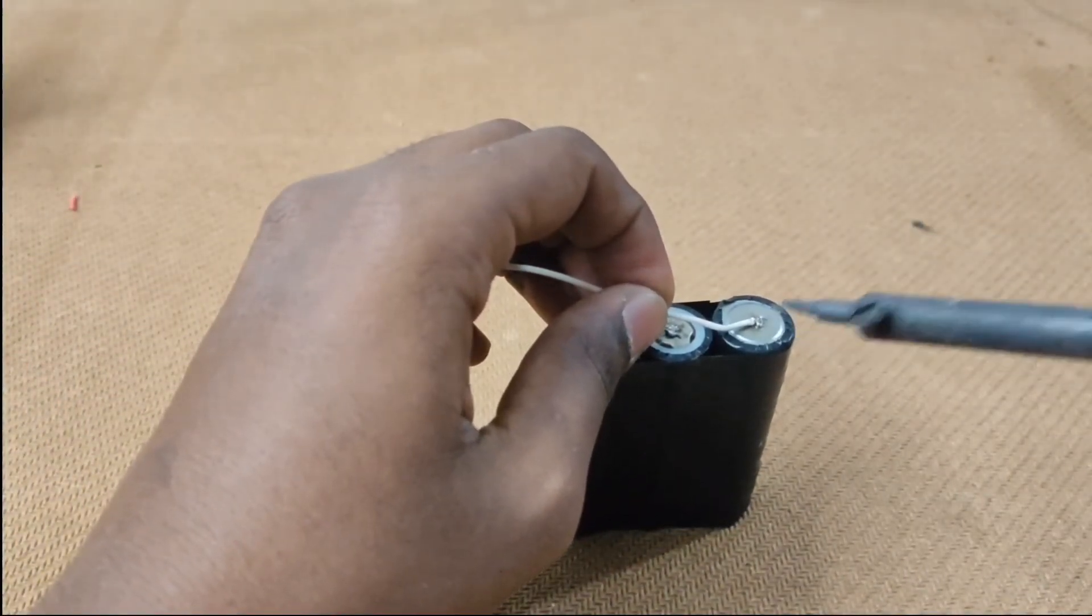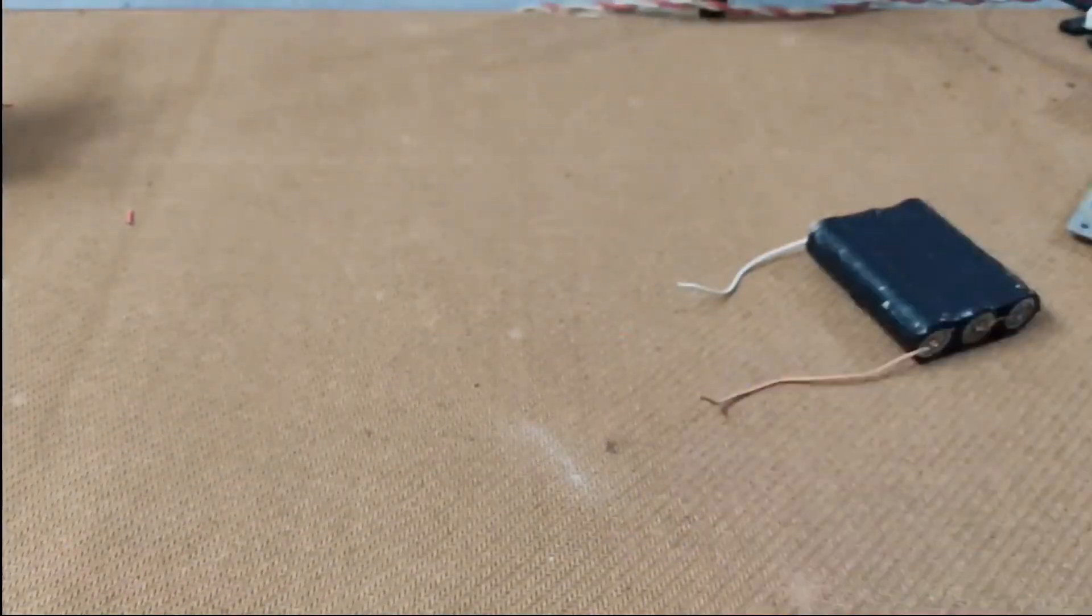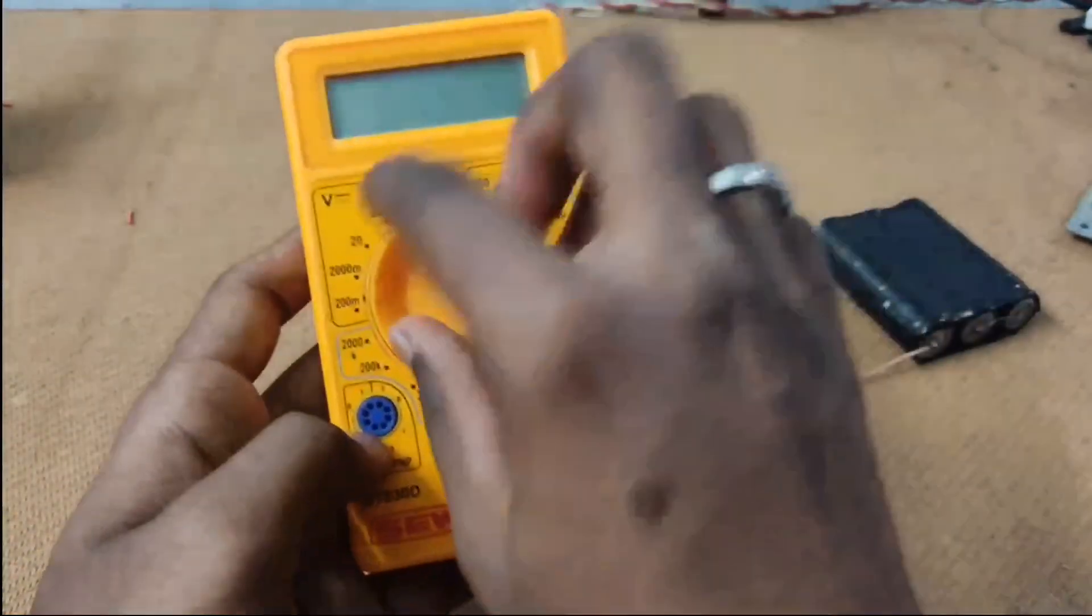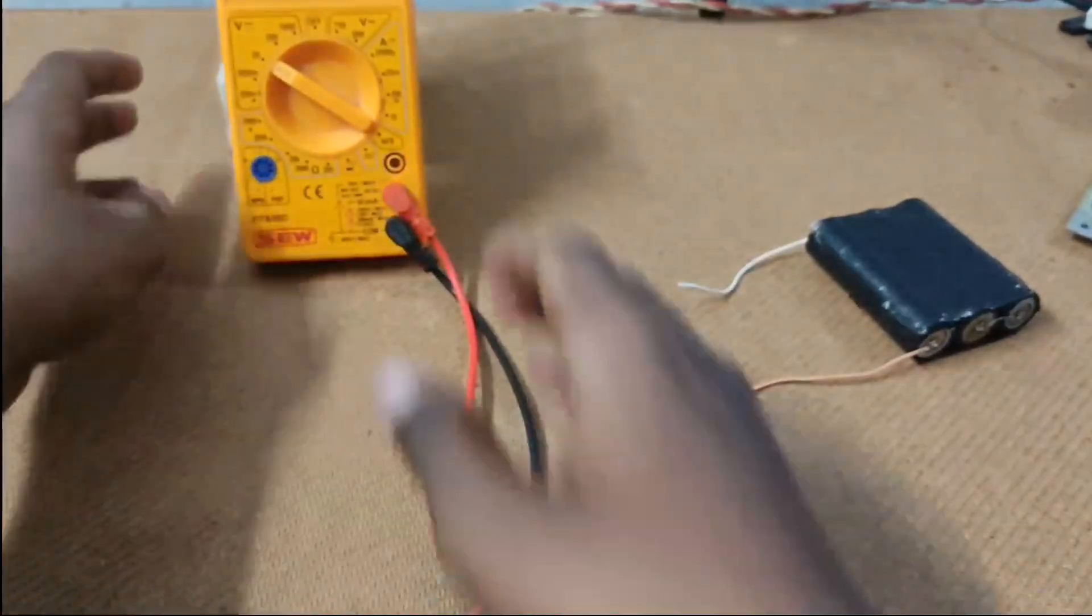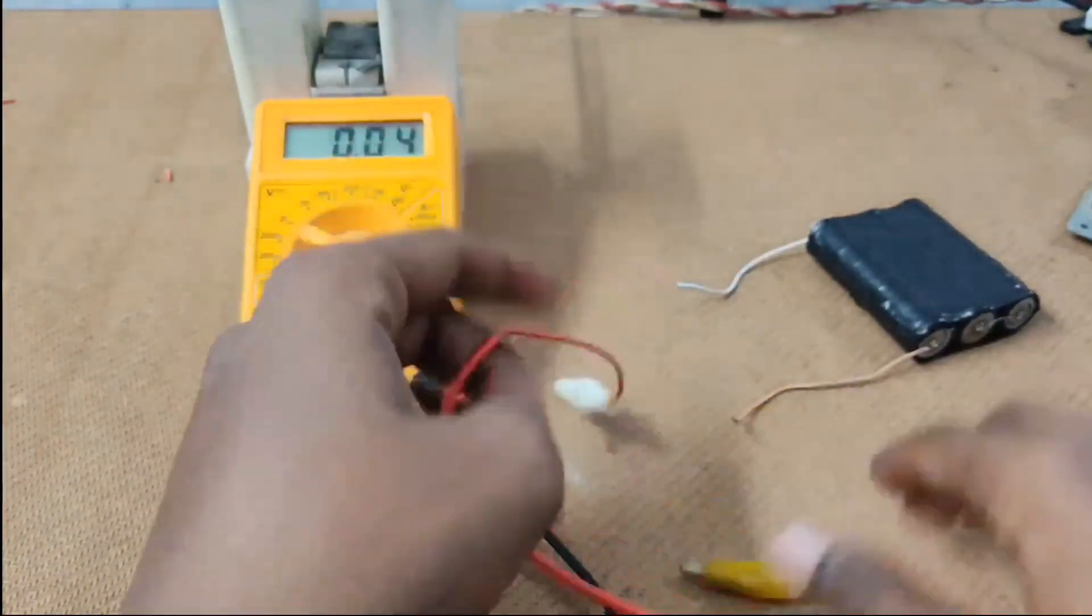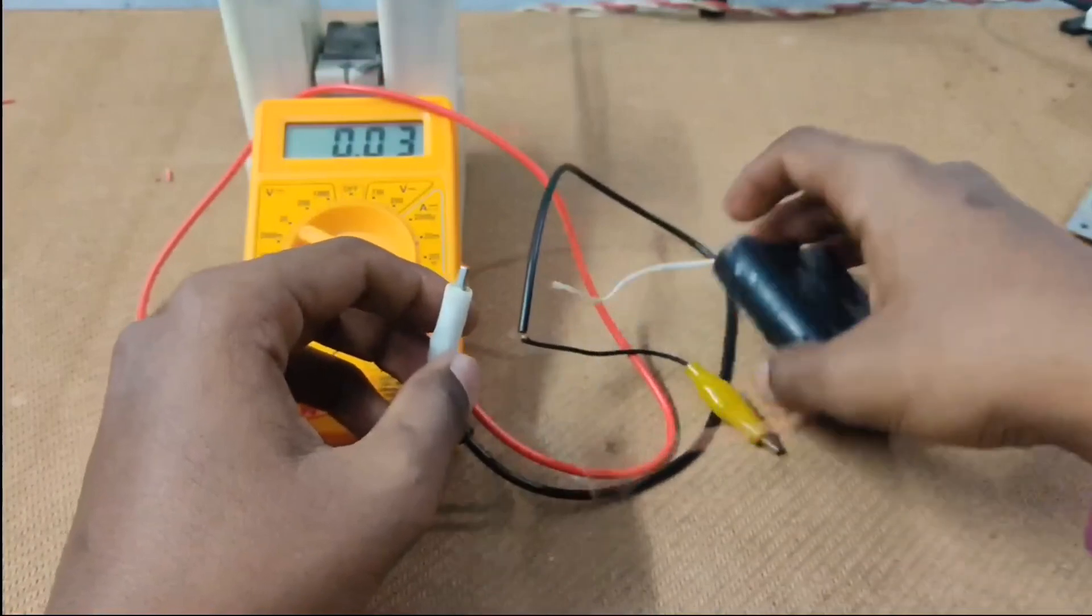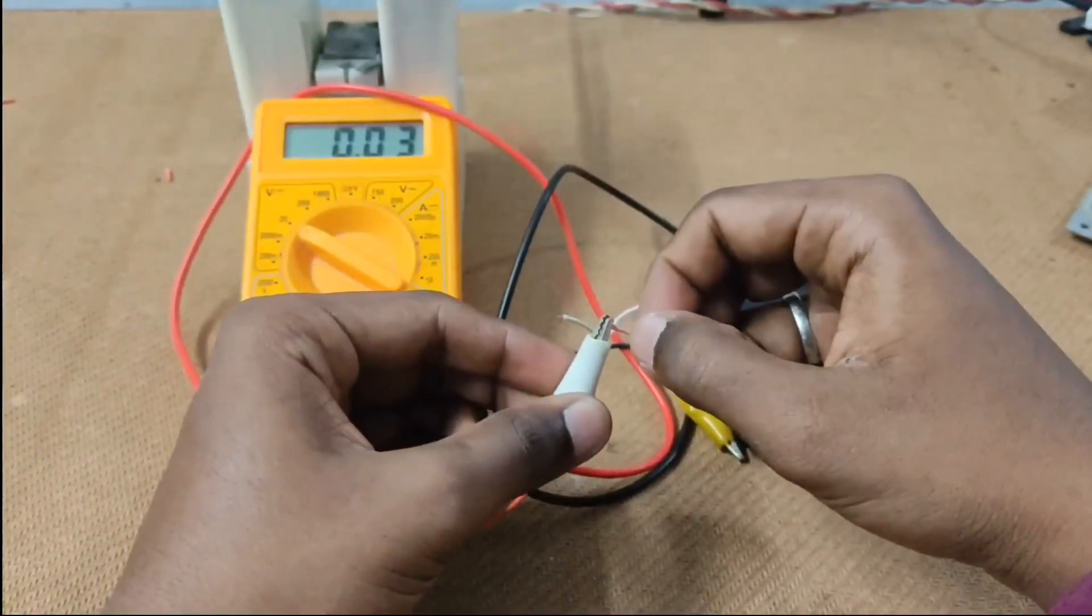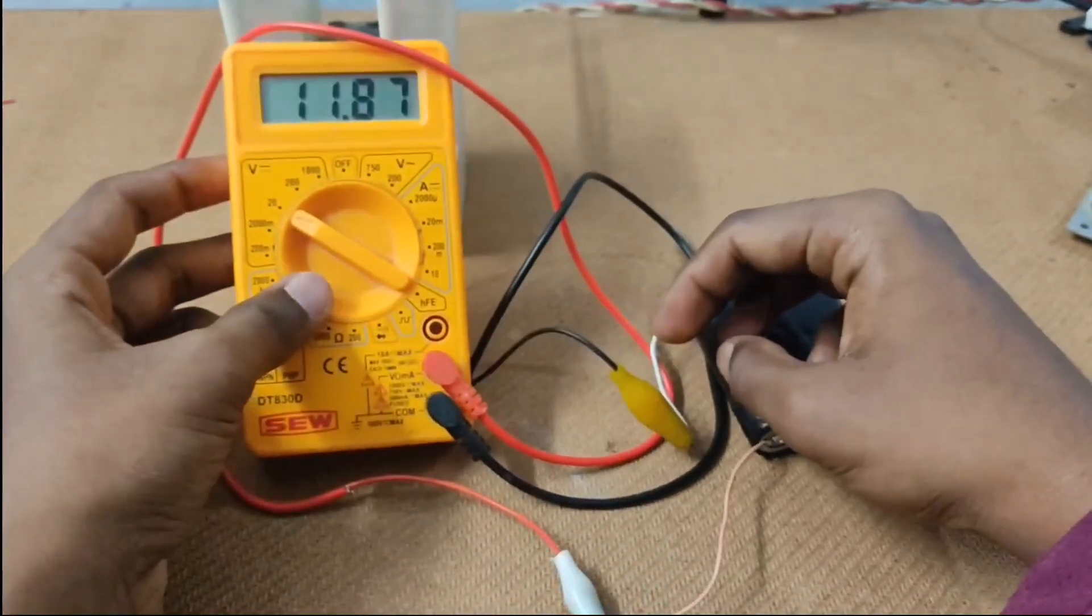We will check the battery and the output. The output will be minus output. We will connect the multimeter. The multimeter reading shows 11.88 volts.